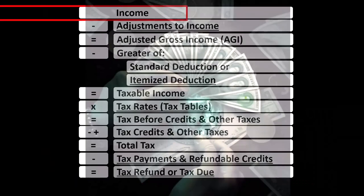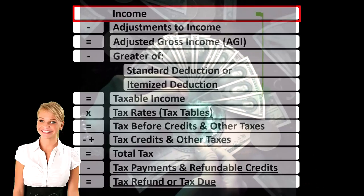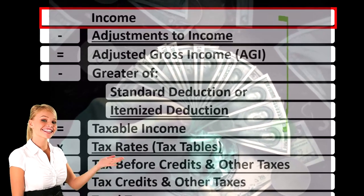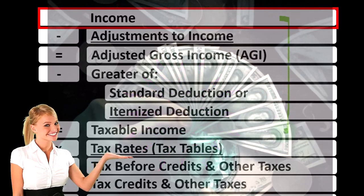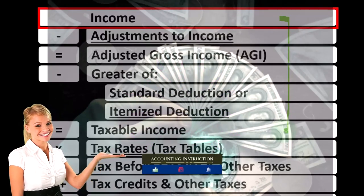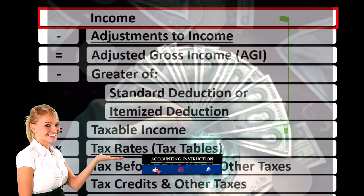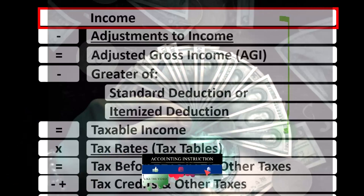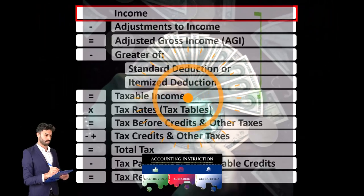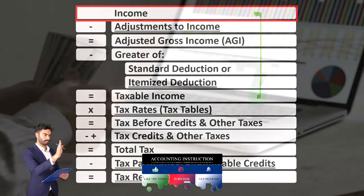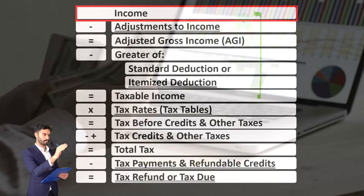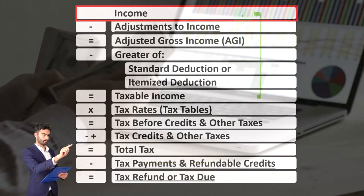Looking at the Income Tax Formula, we're focused on line one — income. The first half of the Income Tax Formula is, in essence, an income statement, although just an outline or scaffolding with other forms and schedules flowing into it. For example, the Schedule C — the Business Income — is, in essence, an income statement in and of itself. Income minus expenses or business deductions gets to the Net Income, which rolls into line one, income, of our Income Tax Formula.